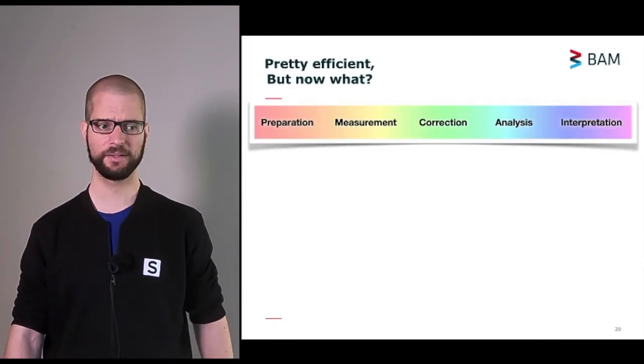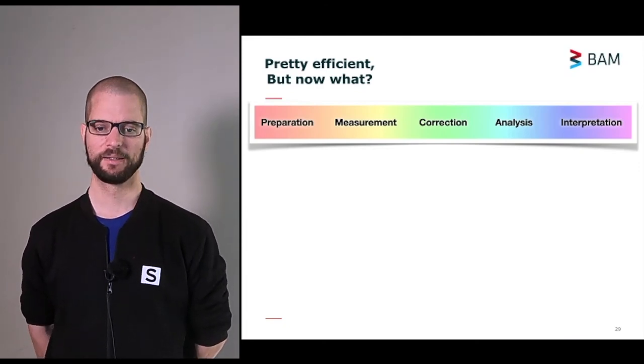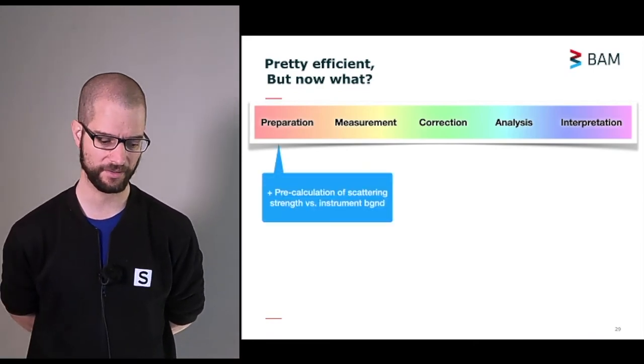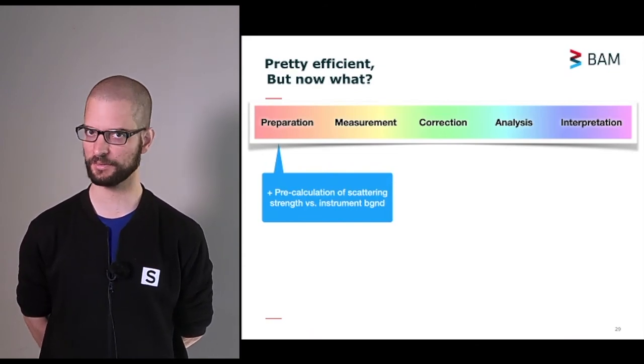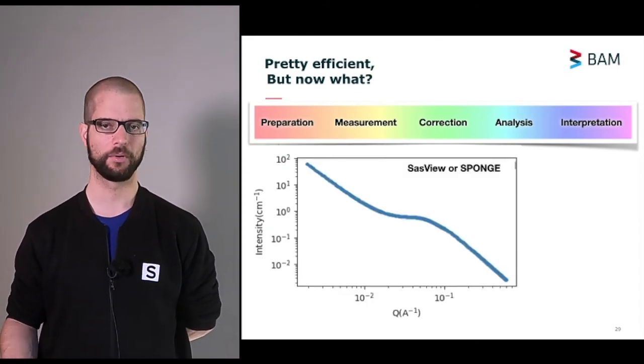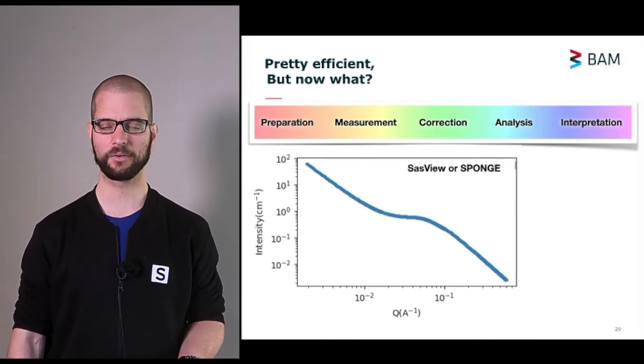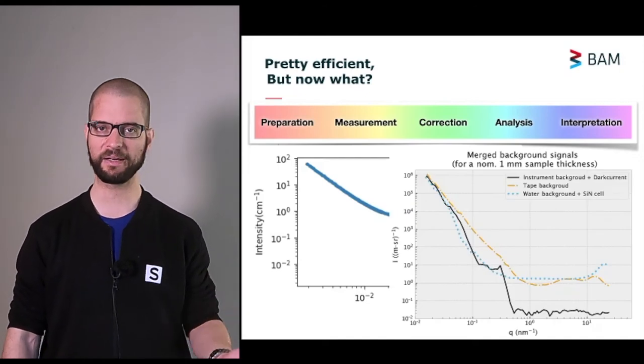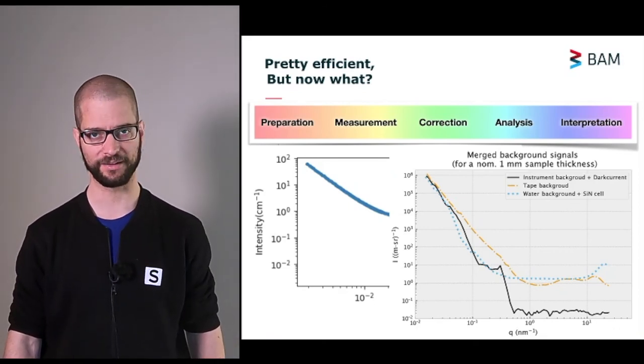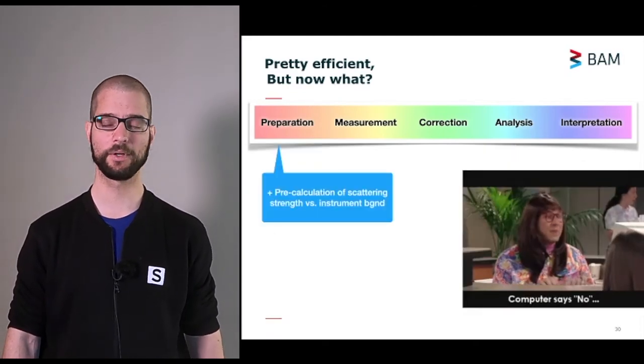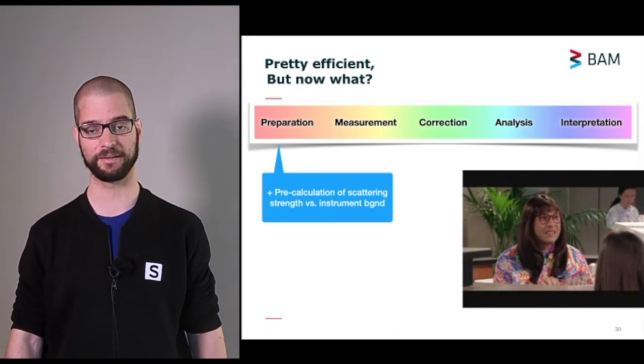Alright, so that is pretty efficient. We're not completely done yet. We've done a lot, but we're not completely done. There's always more to do. For example, we would like to be able to assist the design of our experiments by pre-calculating scattering patterns in cases where we're not sure whether things are going to work. This means that we can use SASView or my program, The Sponge, to calculate scattering patterns in absolute units and compare these calculated scattering patterns with the background levels of our instrument. And then we can immediately see whether we will get a good signal-to-background ratio, whether it's worth trying these experiments on our machine. If not, we can tell in advance that maybe they can go to some of our colleagues with brighter sources or better signal-to-background ratios.